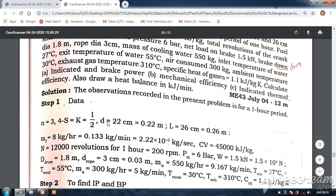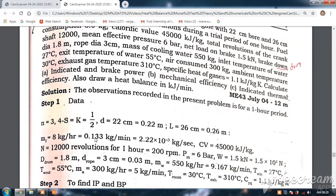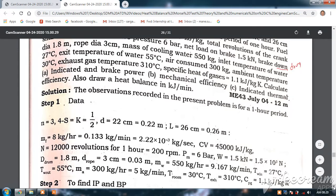That is 0.22 meters, length is 26 centimeters. Mass of fuel is 8 kg per hour, that is 0.133 kg per minute, or 2.22 into 10 raise to minus 3 kg per second. CV 45,000 kilojoules per kg.